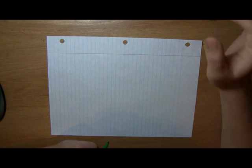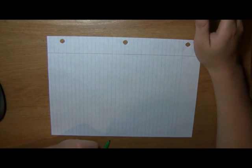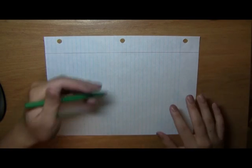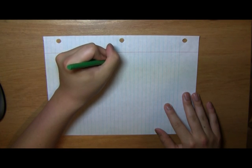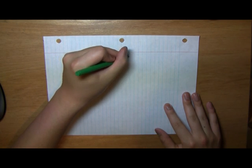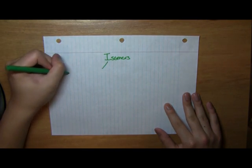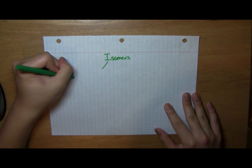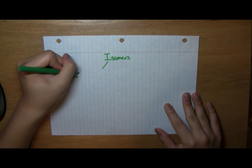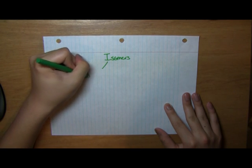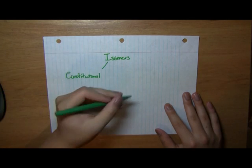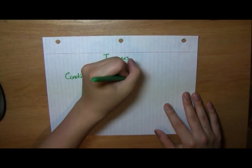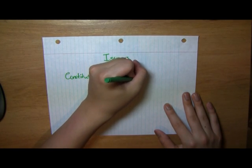Isomers are defined as different molecules which show the same molecular formula. So what are the different types of isomers that we can form? Well, we can have constitutional isomers or we can have stereoisomers.